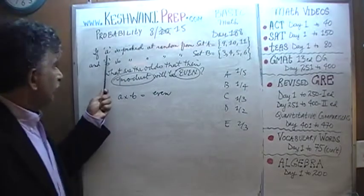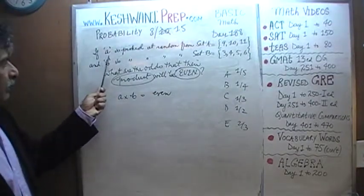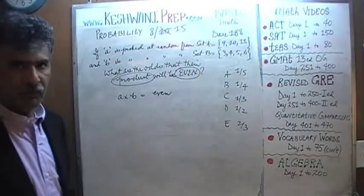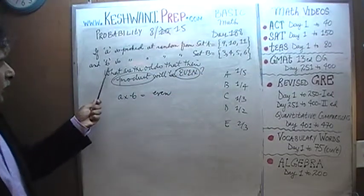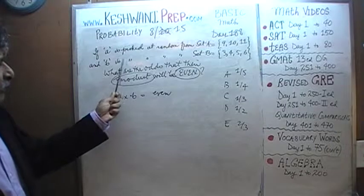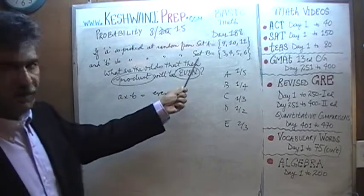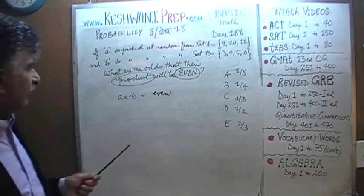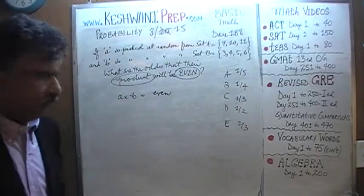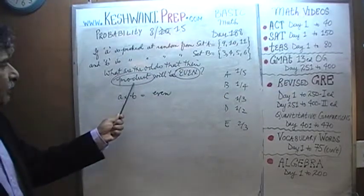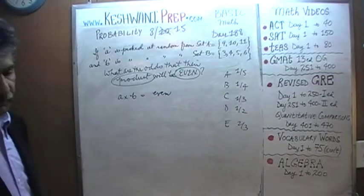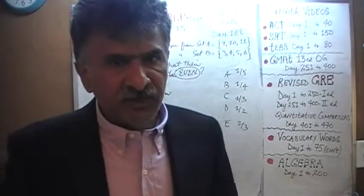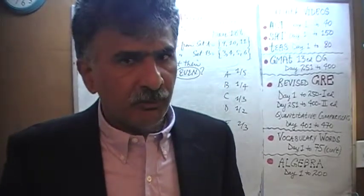We are told that a number a is picked at random from set A, which consists of 9, 10, and 11. Another number b is picked at random from set B, which contains 3, 4, 5, and 6. The question is: what are the odds that their product a times b is going to be an even number? I'll give you five seconds to pause the video and solve the problem yourself.